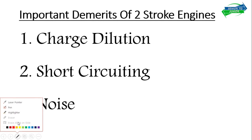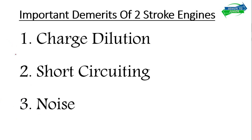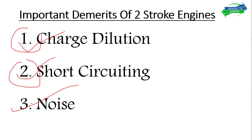There are three main disadvantages of two-stroke engines. There may be more, but we have taken the three important ones: first is charge dilution, second is short circuiting, and third is noise. After understanding these three, you will get to know why two-stroke engines are not in production nowadays — they have been totally banned somewhere in the 90s.